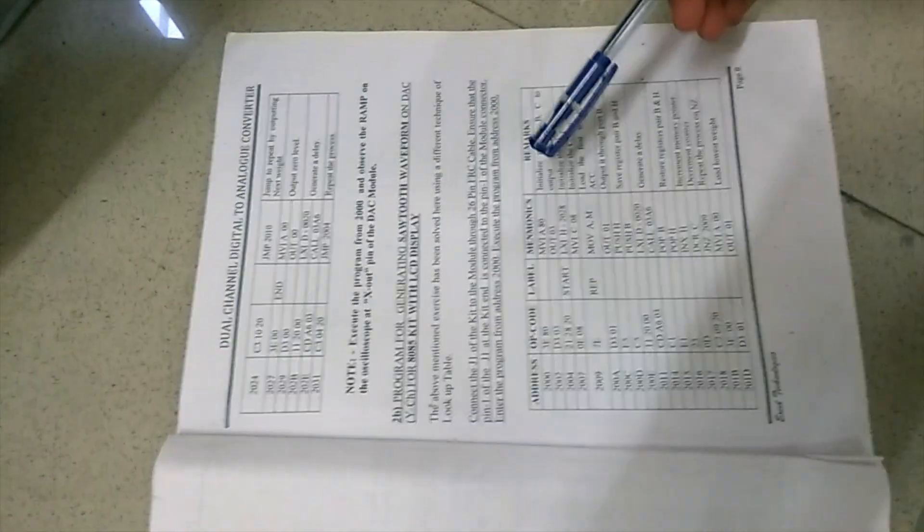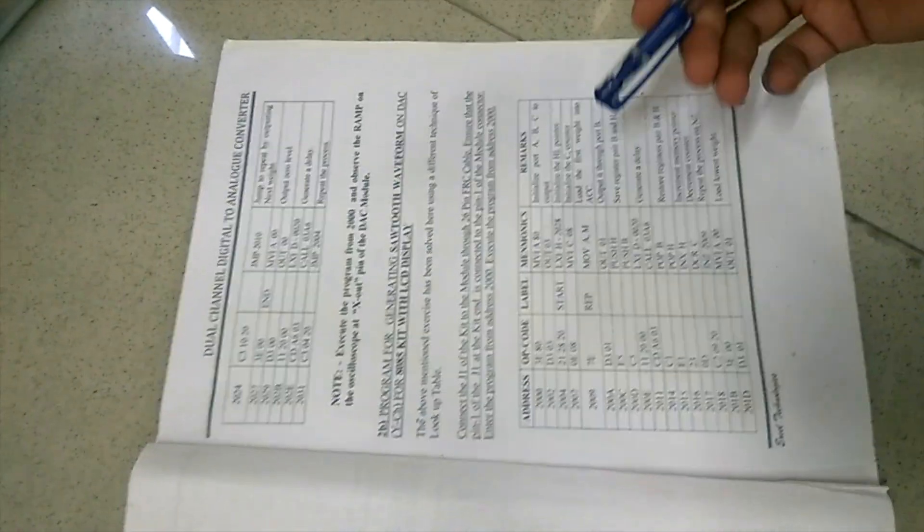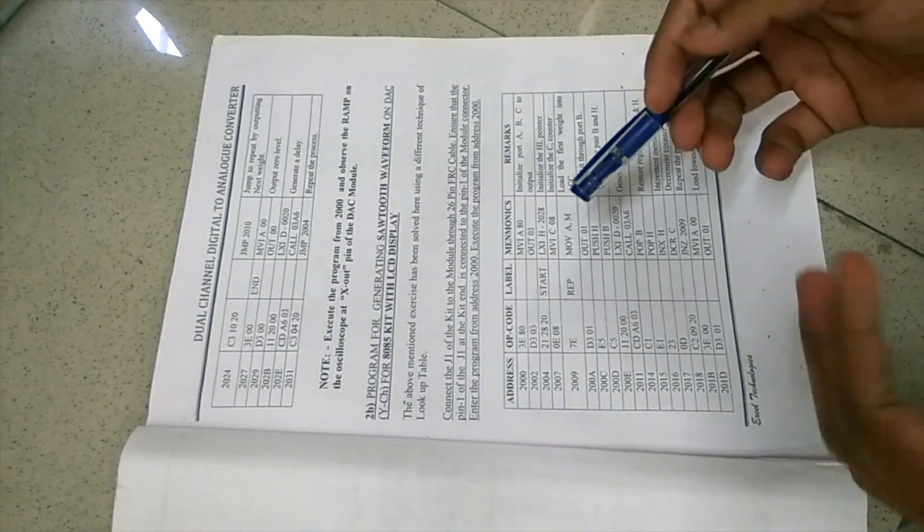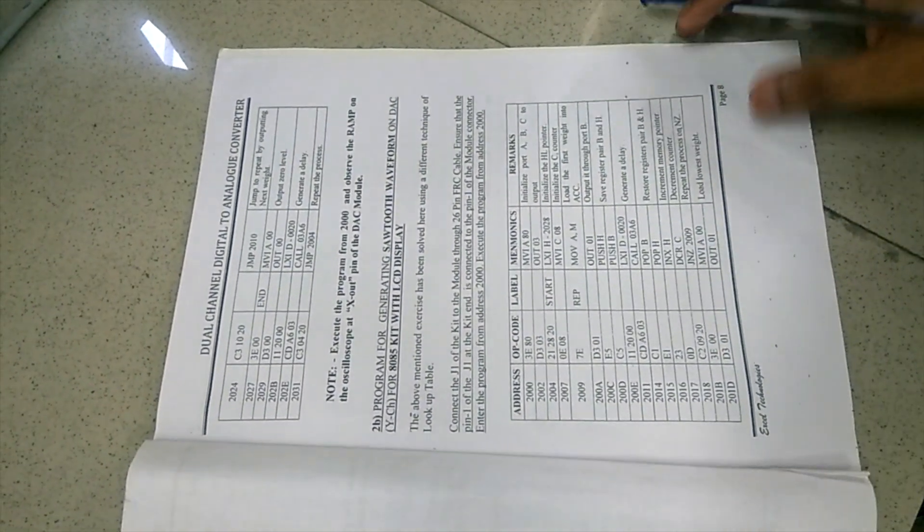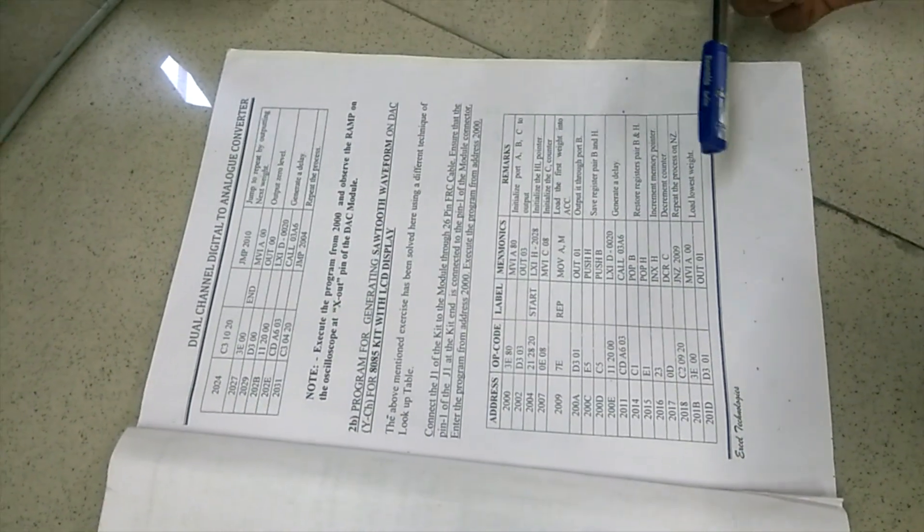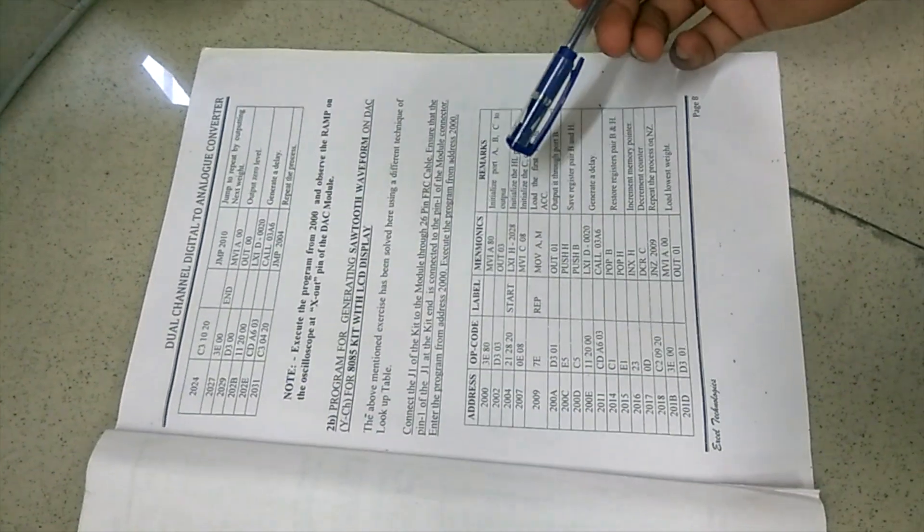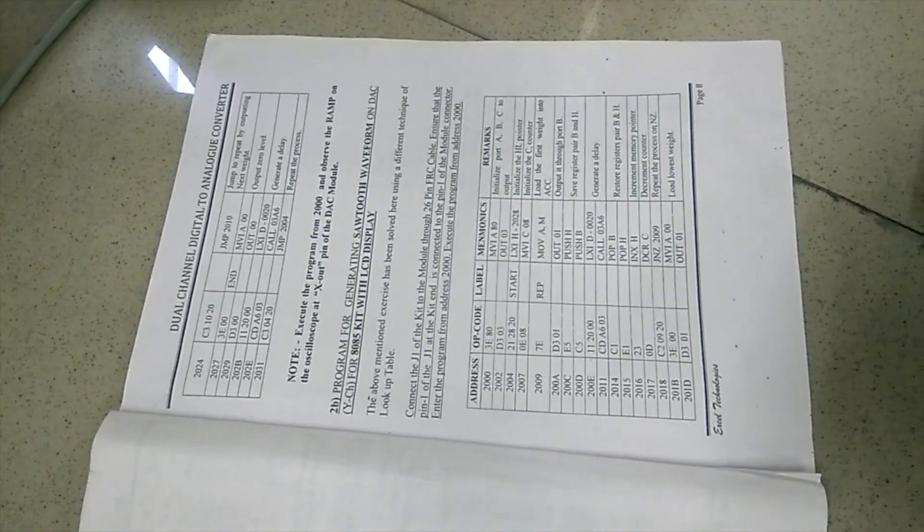Now, I will quickly demonstrate the analog waveform that I will generate using the digital signal with the help of the digital-to-analog kit in the 8085 microprocessor. For this, I have written this set of mnemonics into the 8085 microprocessor. I will quickly explain these mnemonics.